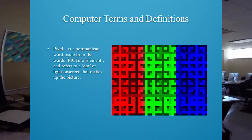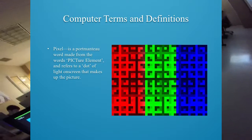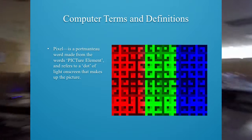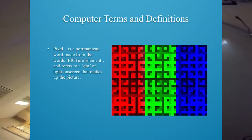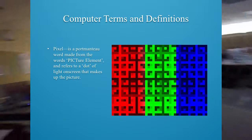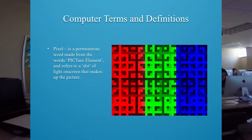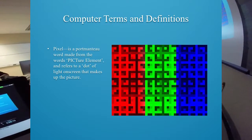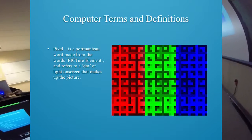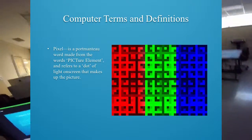A pixel is a compound word made from the words 'picture element.' It refers to a dot of light on screen that makes up the picture.